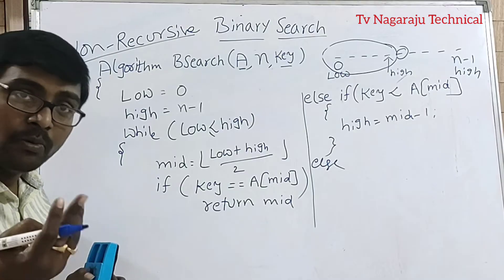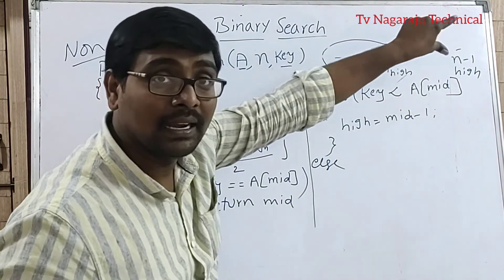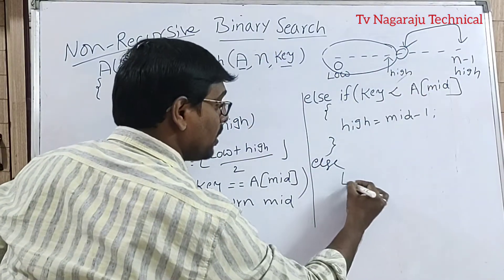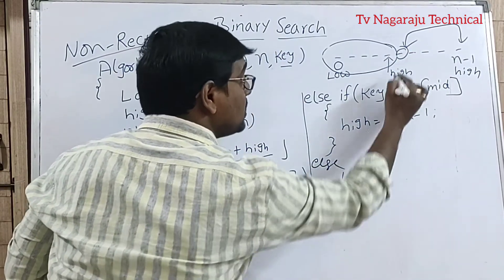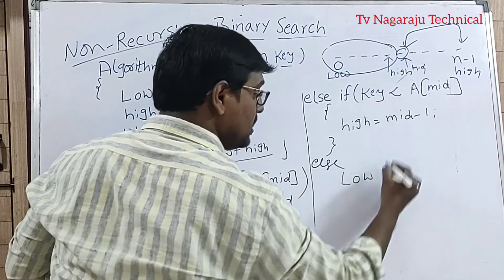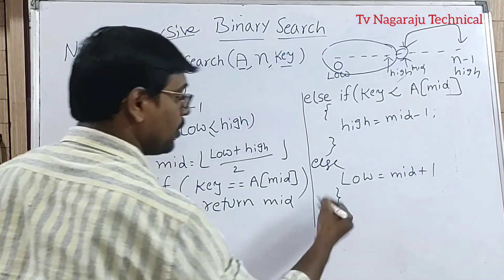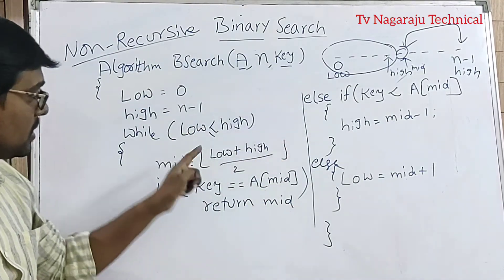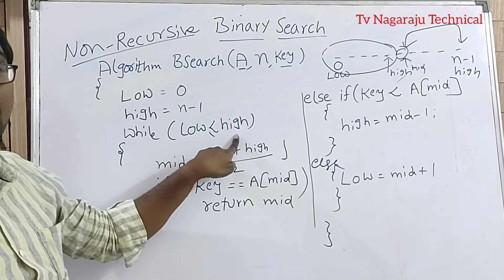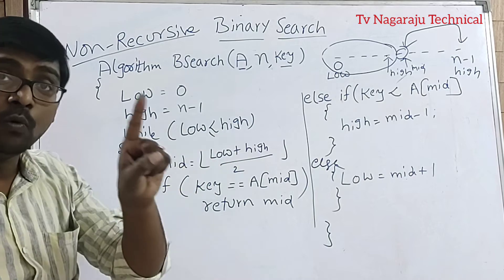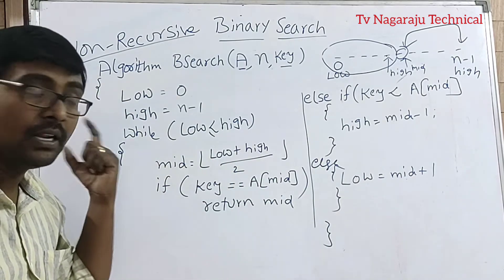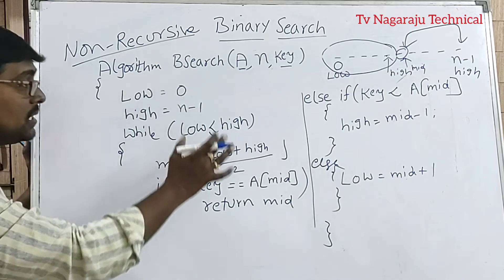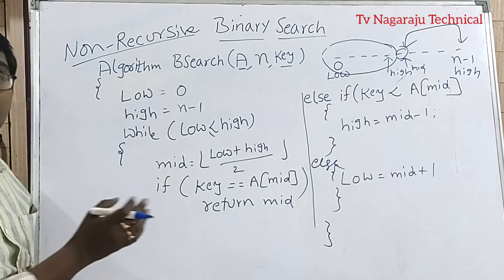The else case is when key is greater than A[mid]. If the key is greater than A[mid], we search the right part, so low is updated to mid plus 1. This process is repeated until low is less than or equal to high. Whenever low equals high, only a single element is present. If it is equal, the element is found; if not, the element is not available. This is the non-recursive approach for implementing binary search.